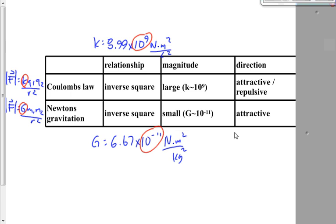One big difference between the two forces: gravity is always attractive — any two masses attract each other. But the electrostatic force (Coulomb's Law) can be either attractive or repulsive, depending on the signs of the charges. Between any two masses there's a gravitational force of attraction; between any two charges there's a force of attraction or repulsion. That's it for today.